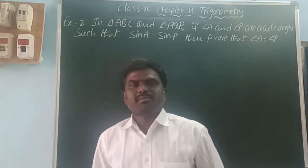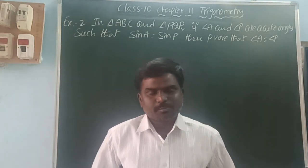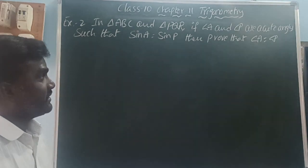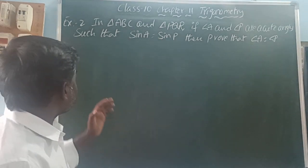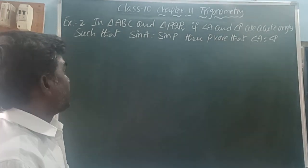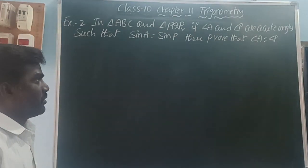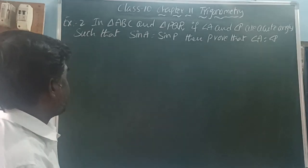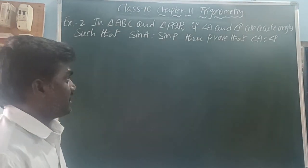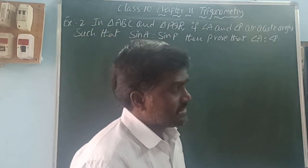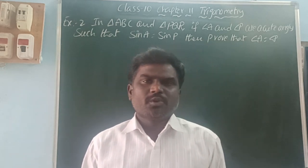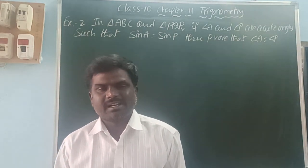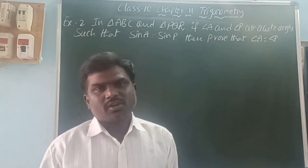Hi, hello! Welcome back to our YouTube channel. In this video I'm going to explain Class 10th Chapter 11 trigonometry. In Sample 2: In triangle ABC and triangle PQR, if angle A and angle P are acute angles such that sine A is equal to sine P, then prove that angle A is equal to angle P. Before we go to the video, please subscribe to our YouTube channel, share with your friends, click the bell icon, and give a like and comment.